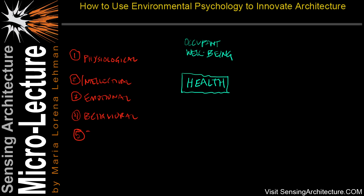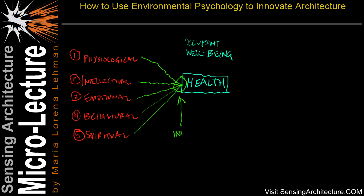Architectural environments can impact all of these different types of health, and all of these five critical health types interconnect — they each affect one another. When looking at all of these holistically, we begin to see that these five key aspects impact occupant well-being in terms of three types of interactions.